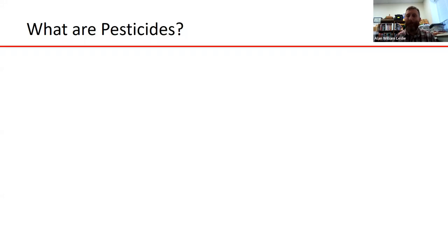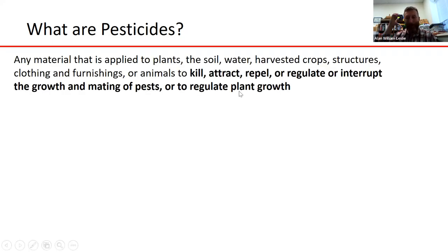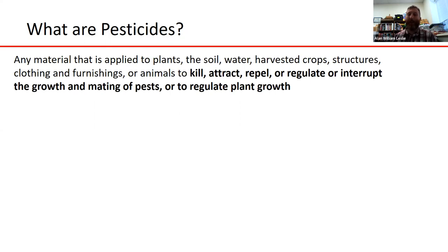To start off, it's always good to have a definition of what we're talking about. The legal definition of a pesticide is any material applied to plants, soil, water, harvested crops, structures, clothing, furnishings, or animals to kill, attract, repel, or regulate the growth and mating of pests, or to regulate plant growth. Essentially, any chemicals you're applying anywhere to manage pests.